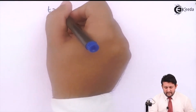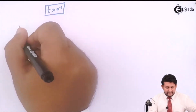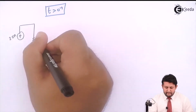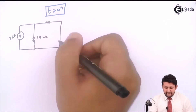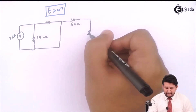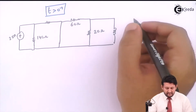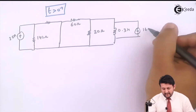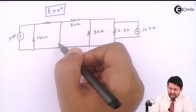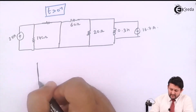Now for the third case: t > 0⁺ condition. The circuit has 25 amps, 140 ohms, switch closed, 60 ohms in series, 20 ohms, and inductor of value 0.3 henry. In parallel with the inductor is the current source of 16.7 amps. Applying the redundant property, all parameters in parallel with the short are removed, so the circuit simplifies further.